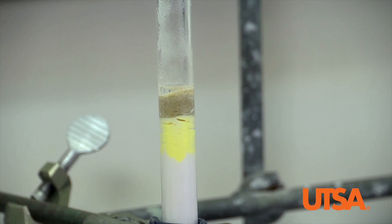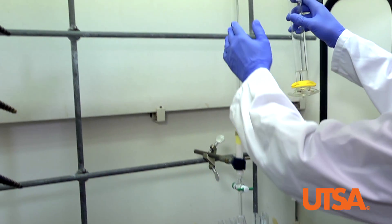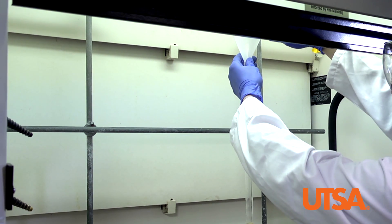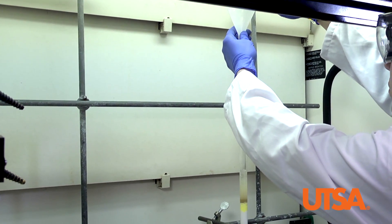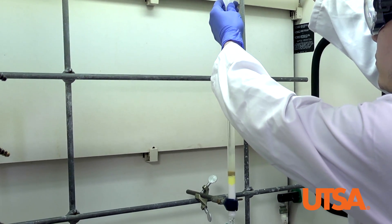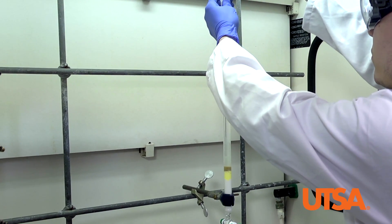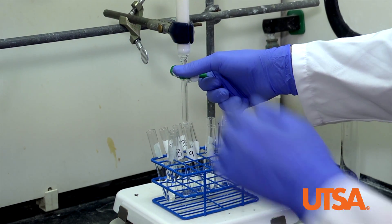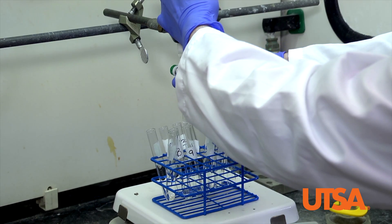Once the petroleum ether has eluted to the top of the sand, add 20 milliliters of dichloromethane to the column. Open the stopcock and finish collecting your next fractions.